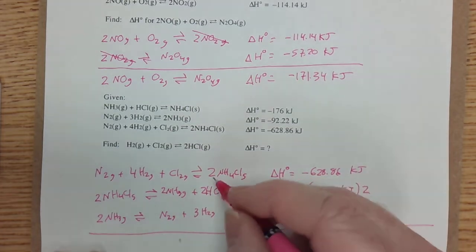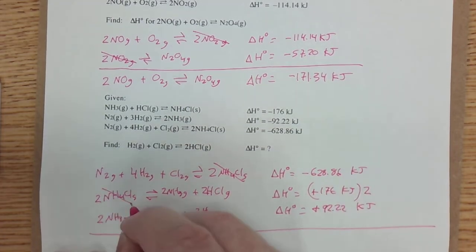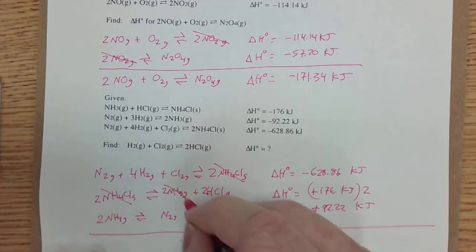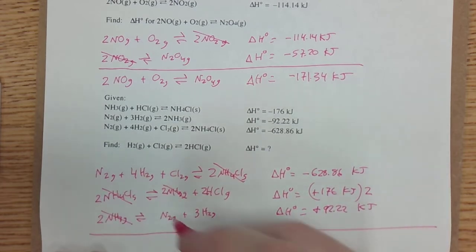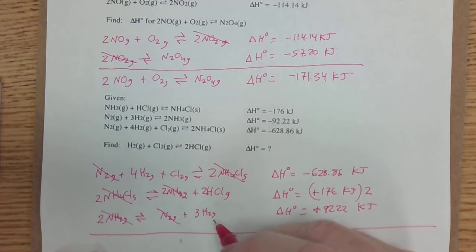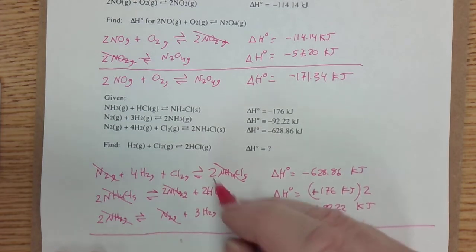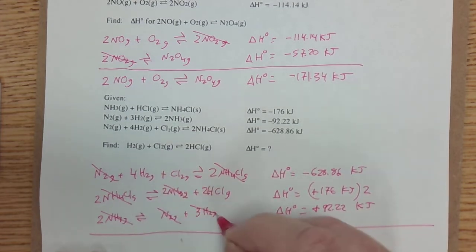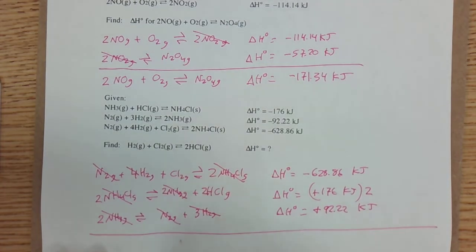And now, kind of a fun part, I can cancel the two ammonium chlorides. I can cancel the two ammonias. I can cancel the N2s. Lots of stuff disappearing. Now, on the right side, I have three H2s. But on the left side, I have four. All three of those go. And that leaves me with just one.